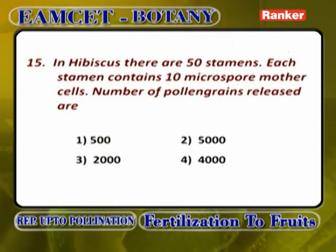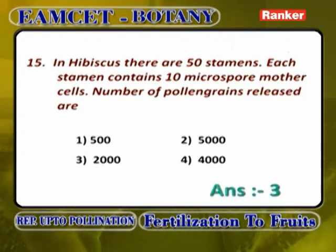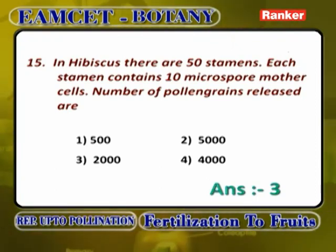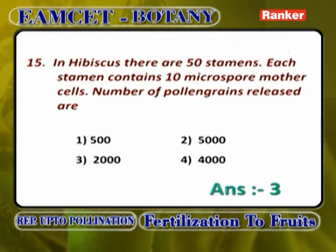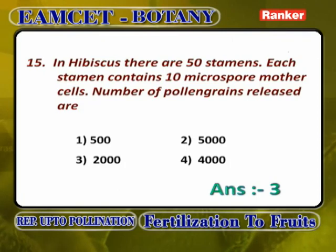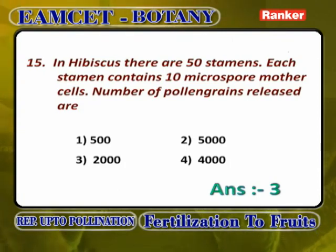In Hibiscus, there are 50 stamens and each stamen contains 10 microspore mother cells. Number of pollen grains produced: 50 × 10 × 4 = 2000. Answer is 2000.